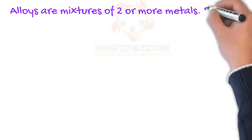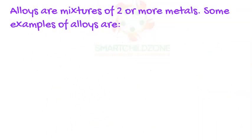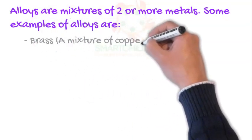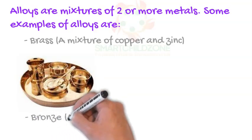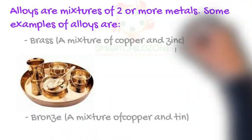Some examples of alloys are brass, a mixture of copper and zinc, and bronze, a mixture of copper and tin.